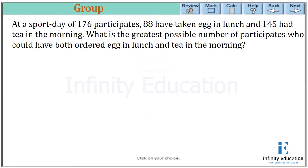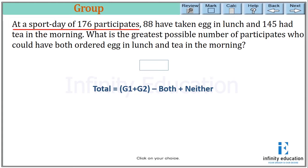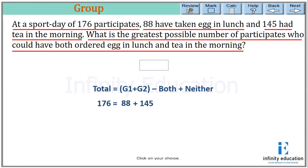At a sports day of 176 participants, 88 have taken eggs in lunch and 145 have had tea in the morning. What is the greatest possible number of participants who could have both ordered eggs in lunch and tea in the morning? We use the formula: total equals group one plus group two minus both plus neither. Total is 176, group one is 88, and group two is 145. I need to find both and neither.